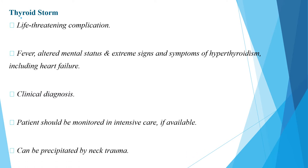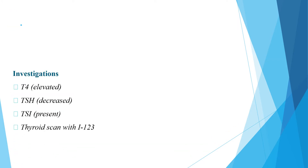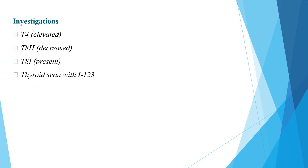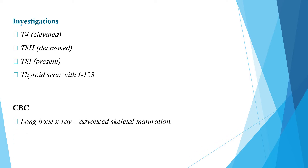Thyroid storm is precipitated most often by neck trauma. Regarding investigations, Graves disease is characterized by elevated T4, decreased TSH, and thyroid stimulating immunoglobulin may be present. Thyroid scan is also useful. Long bone x-ray shows advanced skeletal maturation in hyperthyroidism, where bone age is older than the patient's age, compared to delayed skeletal maturation seen in hypothyroidism.